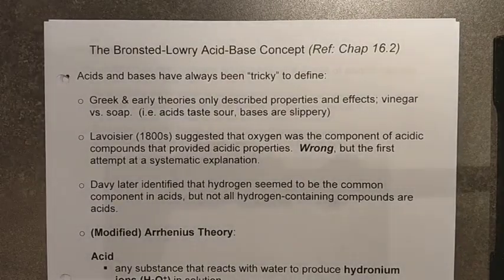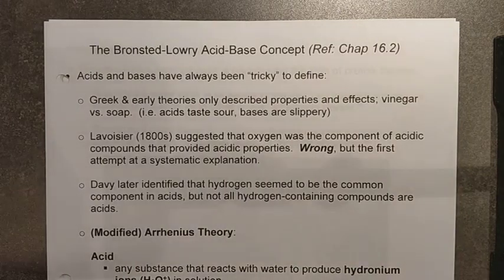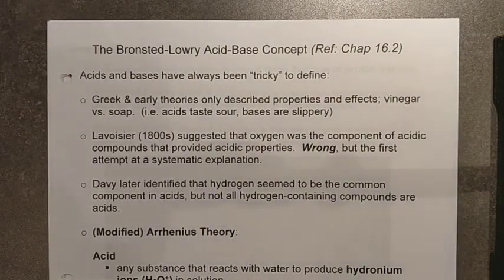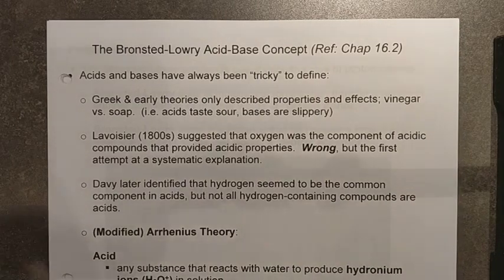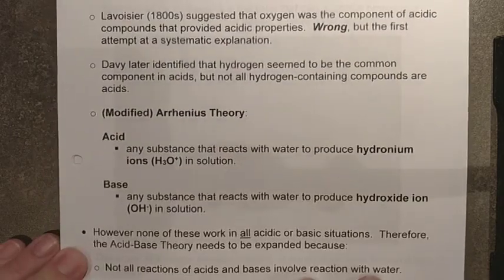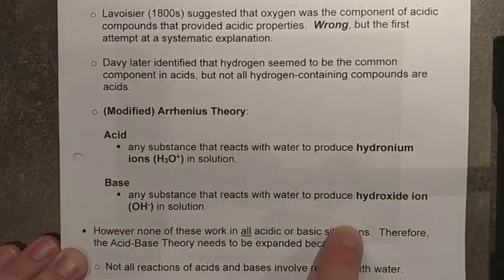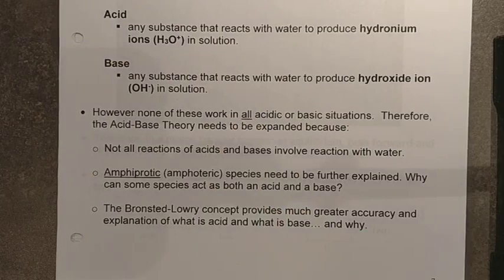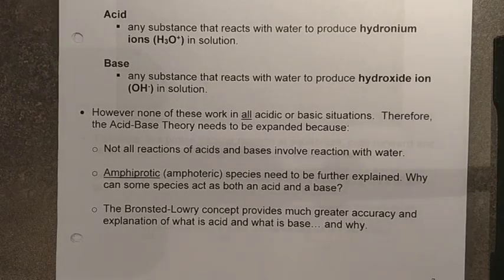So what we want to do now is talk about the Bronsted-Lowry acid-base concept. We last talked about acid-bases using the modified Arrhenius definition, which was really just looking at acids as substances that reacted with water to produce hydronium, and bases as substances that either reacted with water or dissociated directly to produce hydroxide. The problem is modified Arrhenius can't explain everything that is acid or base — it does a pretty good job and explains most, but it certainly isn't all-inclusive.